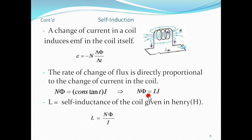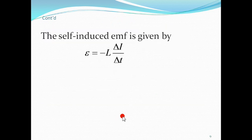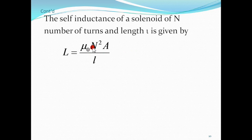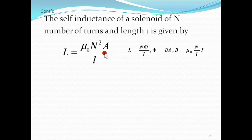Self-inductance, like mutual inductance, is given in henries. From the expression, L equals N times phi divided by I. In the process of self-induction, the back electromotive force opposing the EMF within the coil itself is e equals L times the rate of change of current. Self-inductance depends on the geometry of the coil. For a solenoid, the formula is L equals mu-naught times N-squared times A over l.